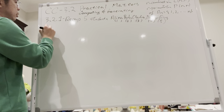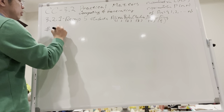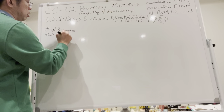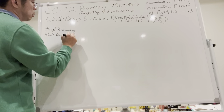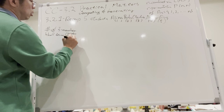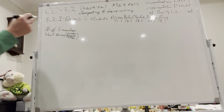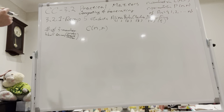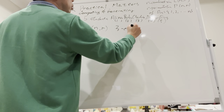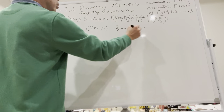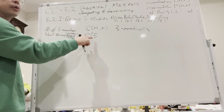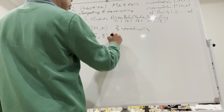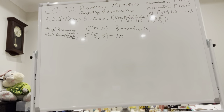If I ask how many three-member basketball teams can be formed where order doesn't matter, in last week's homework we said this is represented as a 3-combination. For five students, the answer is C(5,3), which equals 10. We compute this basically just by listing it.